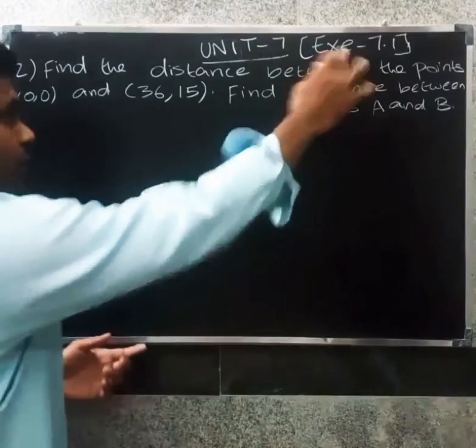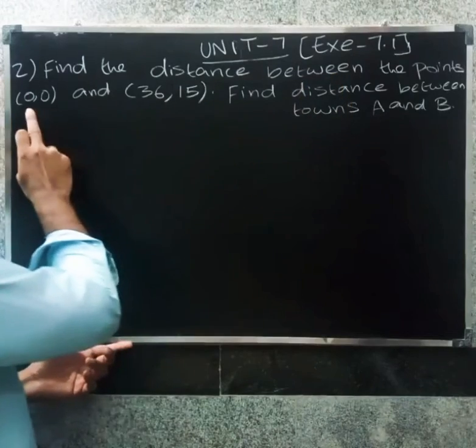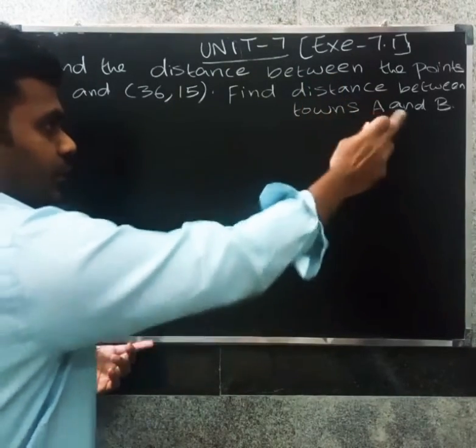So welcome friends, I need to ask you a second question. Find the distance between the points (0,0) and (36,15). Find the distance between the towns A and B.